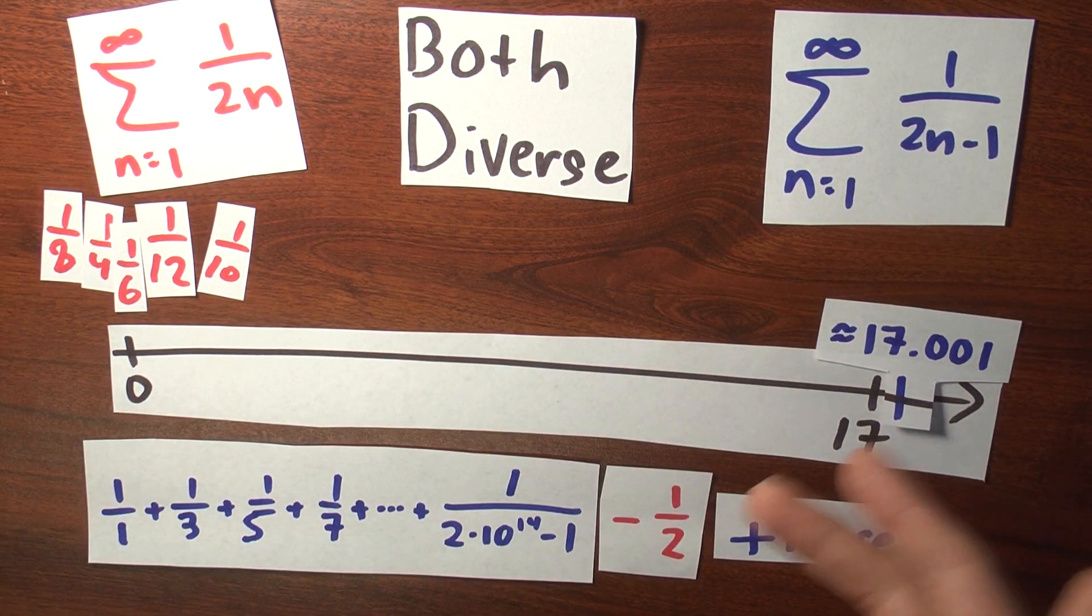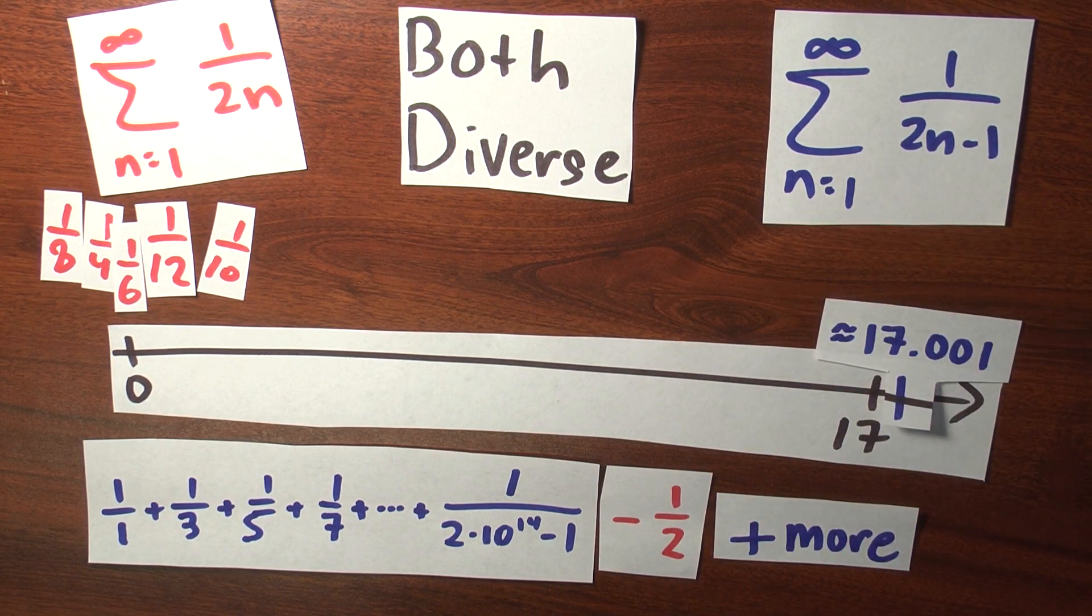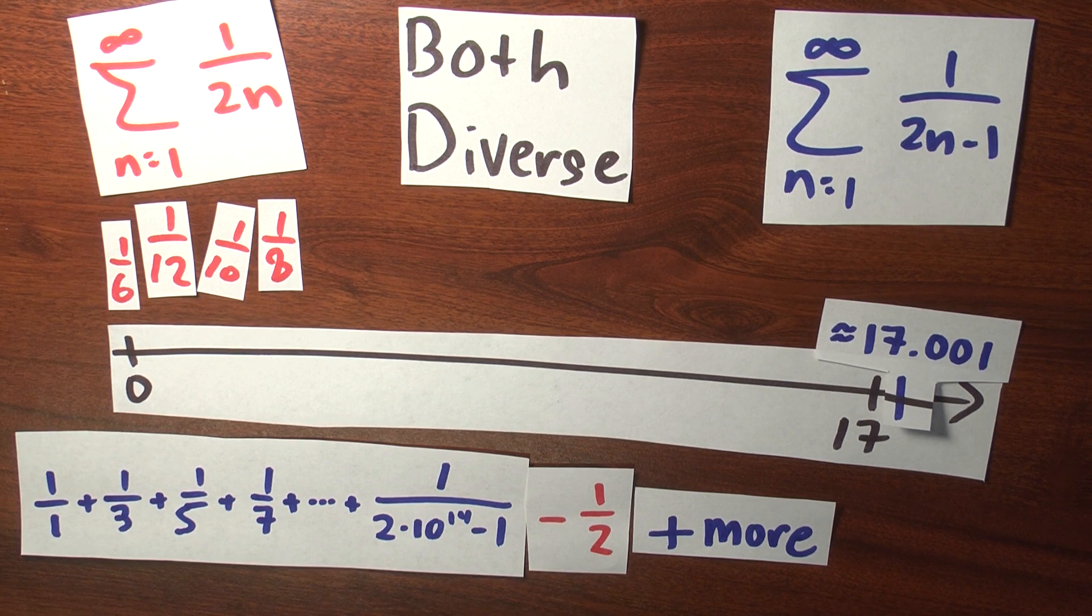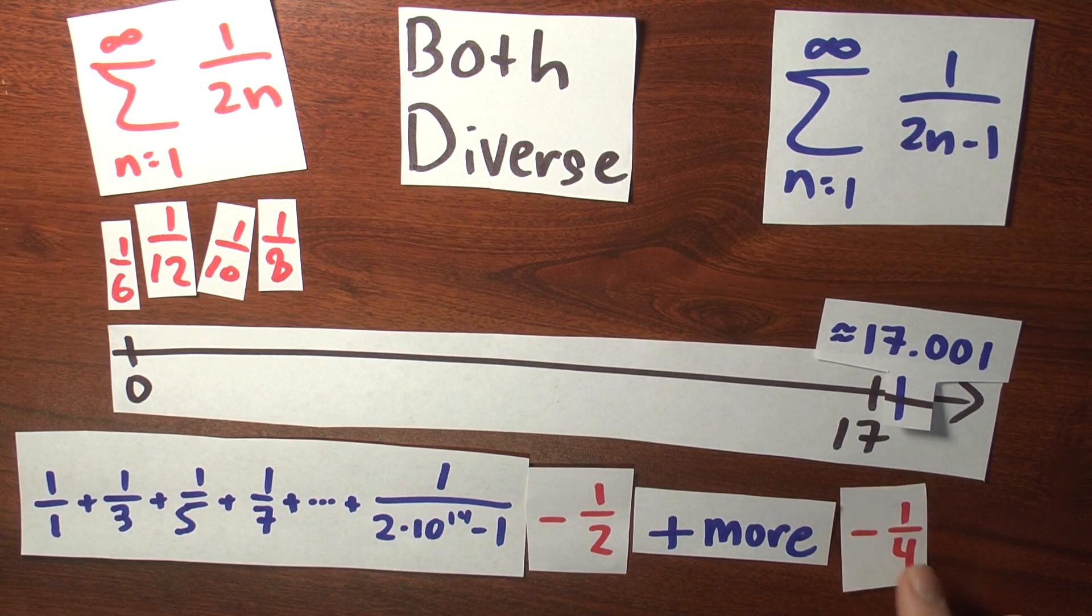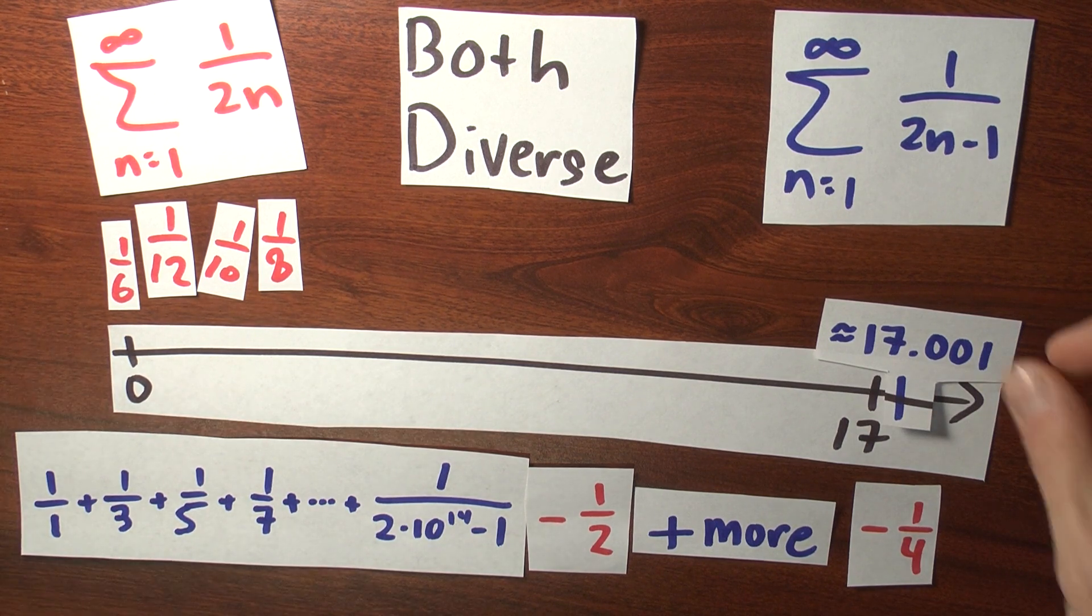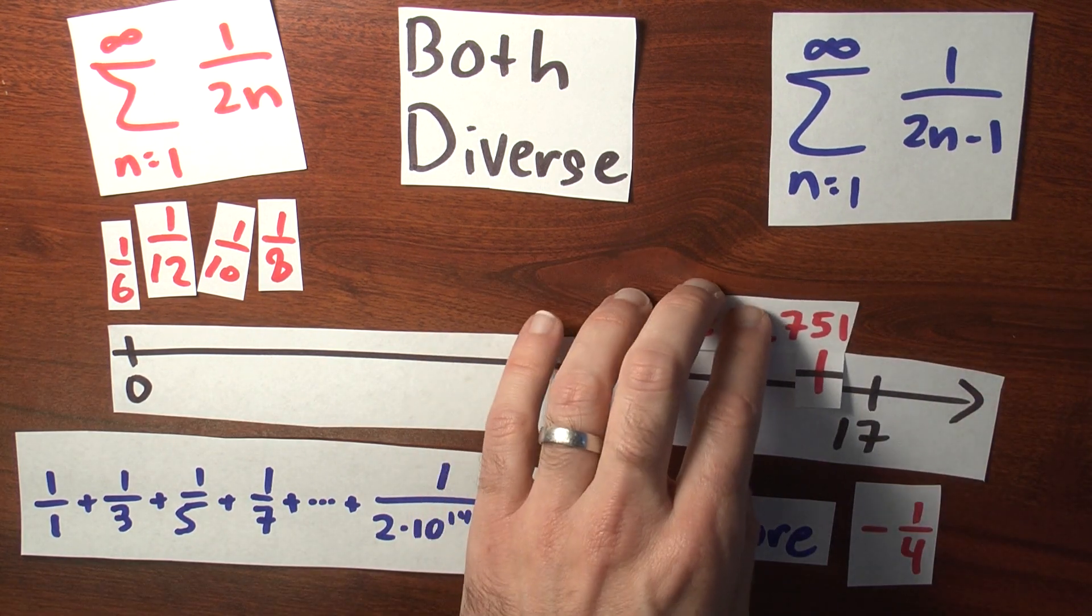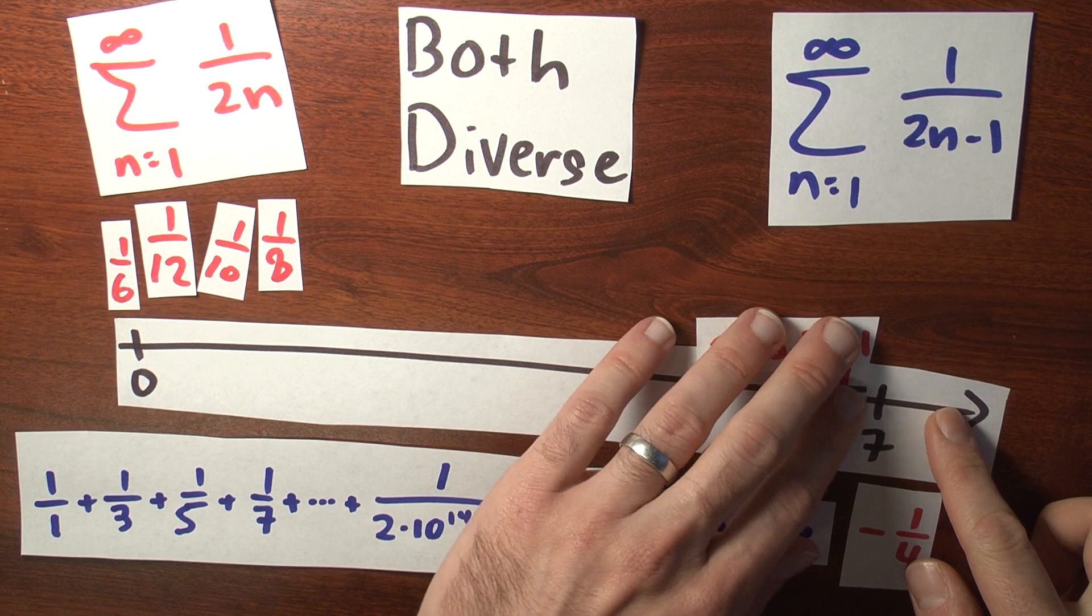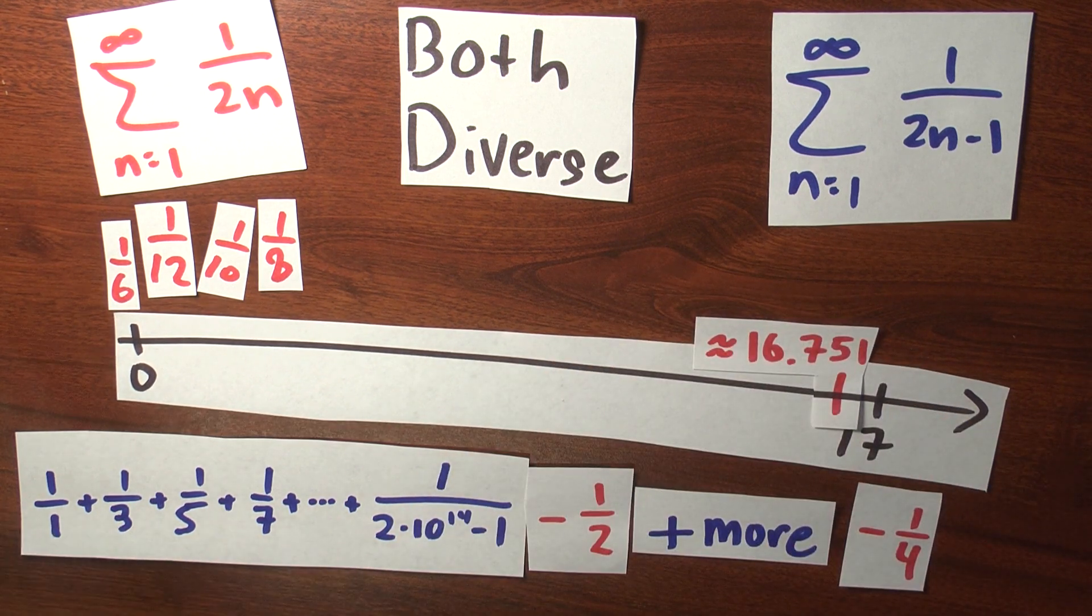Maybe I'll end up at, say, 17.001 or thereabouts. And some more of the negative ones. I'll pick away this quarter. I'll subtract a quarter from here. And now my 17.001 or thereabouts, maybe moves over to a little bit less than 17. Say, 16.751.